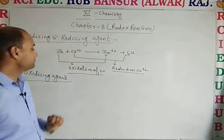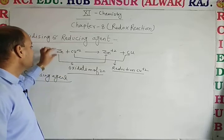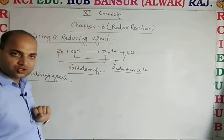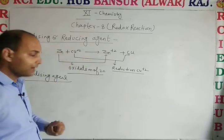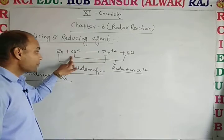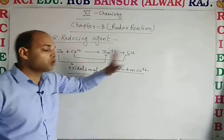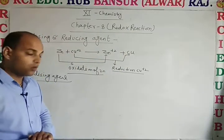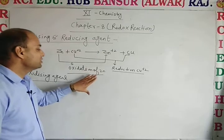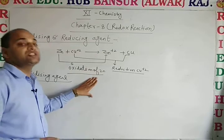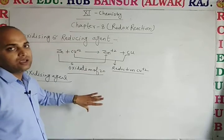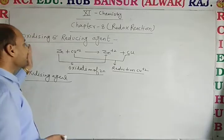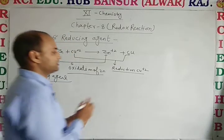Then we can say zinc is oxidized into zinc²⁺, and copper²⁺ is reduced into copper. Now, on the basis of this result, we define the oxidizing and reducing agent.